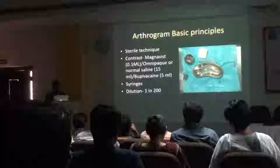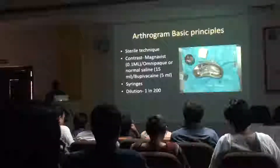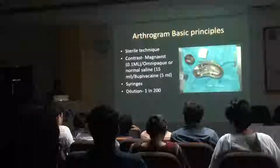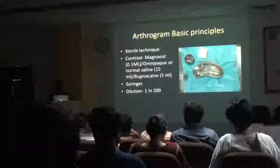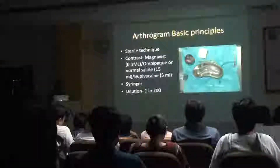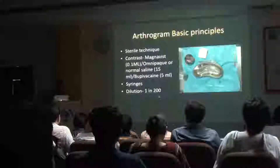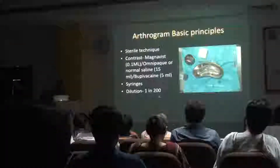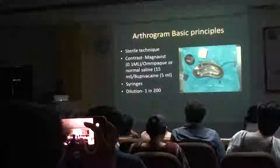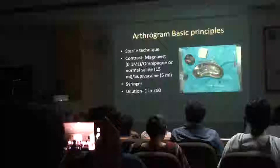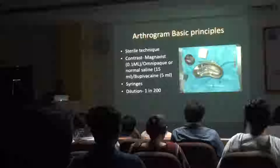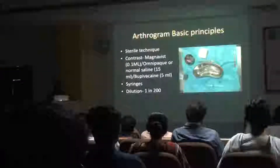You need a lot of stuff. You need contrast — both MR contrast and CT contrast. You need some normal saline. I also mix it with bupivacaine. You need various syringes. The key thing is the dilution is 1 in 200. If you take 20 ml of any fluid, you need to mix it with 0.1 ml of MR contrast. If you take 40 ml, you've got to make sure that it's 1 in 200 dilution — otherwise your images may not look optimal.